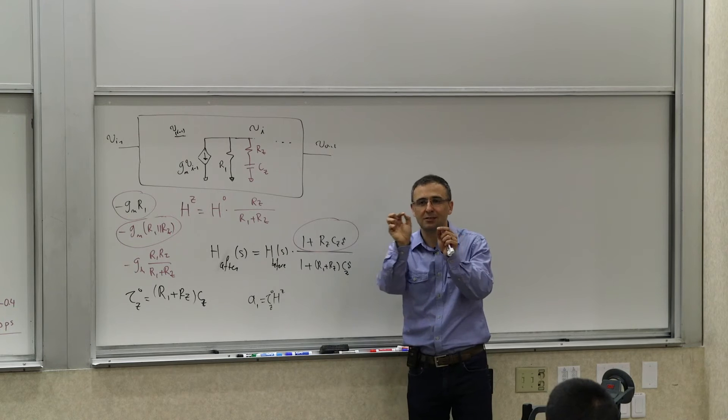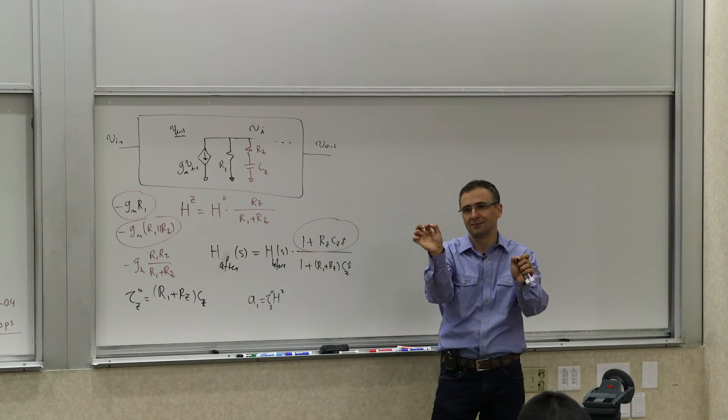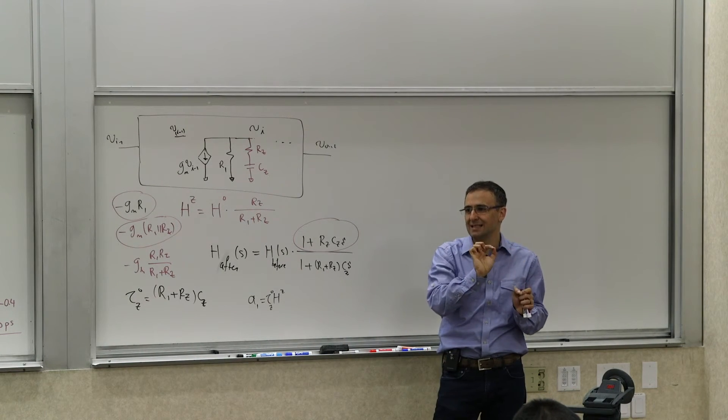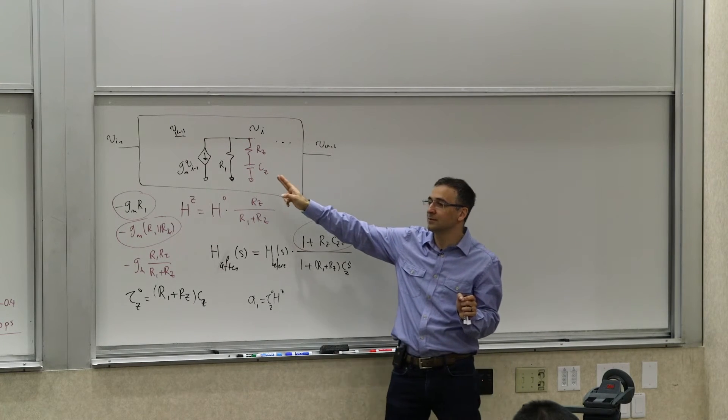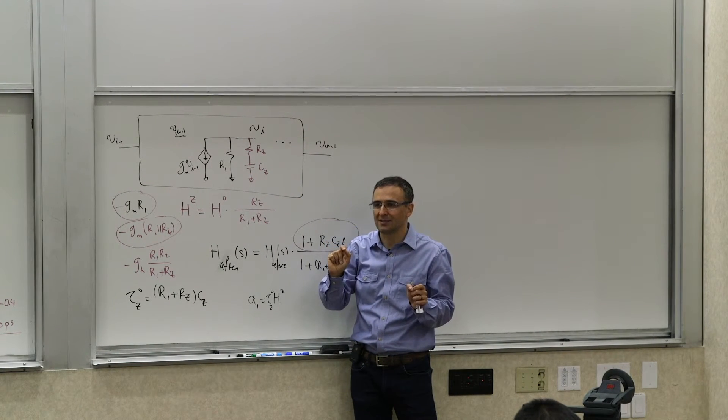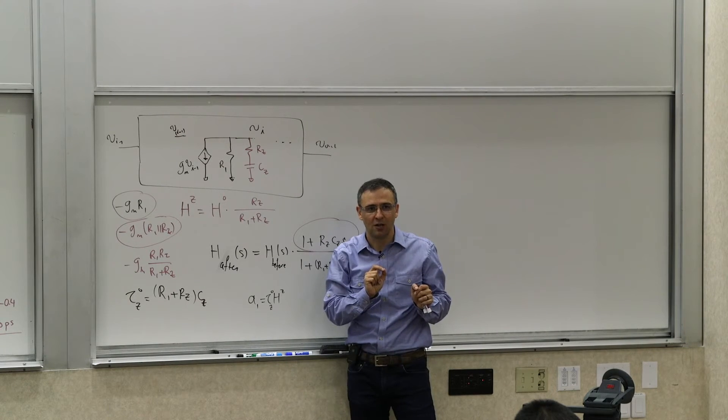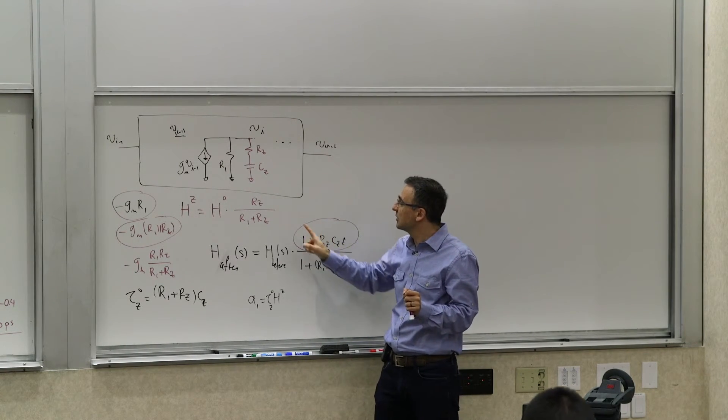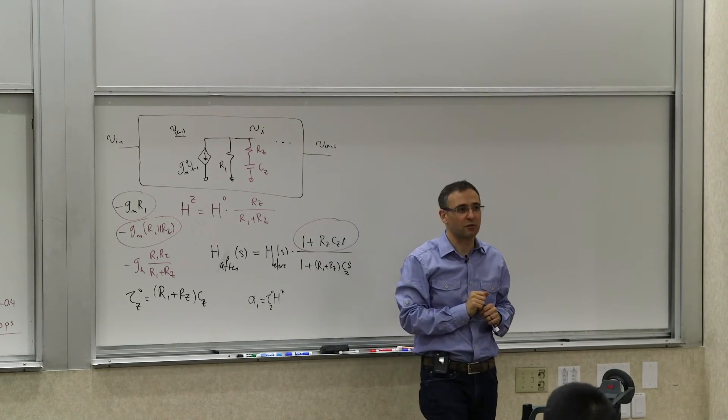So basically this introduces a pair of pole and zeros. And this is good because you essentially have two degrees of freedom. You can place the pole and zero to some extent independently by choosing the Rz and Cz with respect to R1.